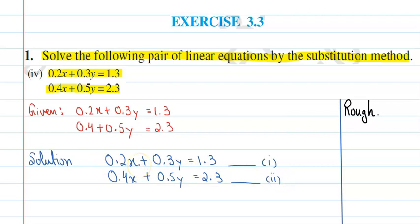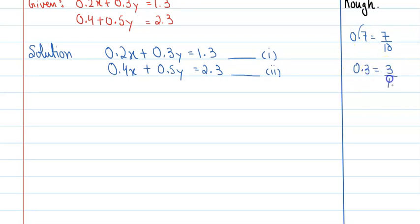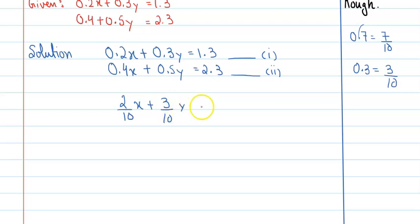अब देखें, हमें करना क्या है। अगर ऐसा कुछ लिखा होता है — 0.7 — तो इसको आप लिख सकते हैं 7 upon 10। क्योंकि आप decimal हटा देते हैं, यह छोटी classes में आप पढ़कर आए। ऐसे अगर 0.3 लिखा होगा तो आप इसको लिख सकते हैं 3 upon 10। तो अगर हम first equation को consider करें, तो पूरी first equation को हम कुछ इस तरीके से लिख सकते हैं: 2 upon 10 · x plus 3 upon 10 · y equal to 13 upon 10.